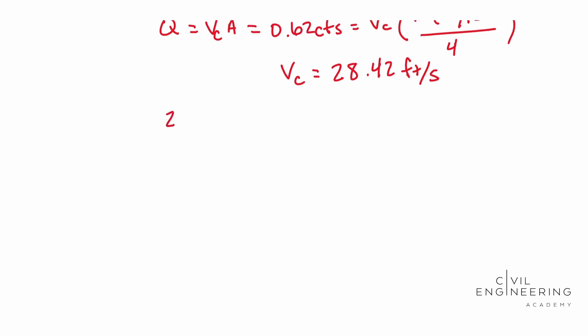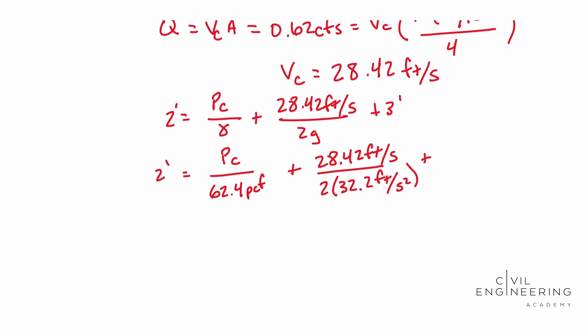So rewriting, we have two equals. Cause remember our pressure and velocity canceled out. Two feet is equal to the pressure of C over gamma, plus our velocity at C, which is now 28.42 feet per second over two G. And we have our elevation of three feet. And so going off of that, we understand that two feet is equal to our pressure at C. Our specific weight of our water is 62.4 pounds per cubic foot. And this guy is going to be plus 28.42 feet per seconds. And then we're going to divide that by two times G, which is 32.2 feet per second squared. And we're going to add three feet. So whenever you solve for the pressure at C, you should end up with negative 89.94 pounds per square foot.